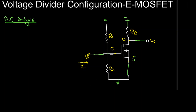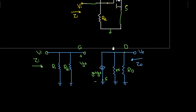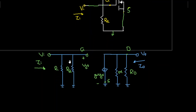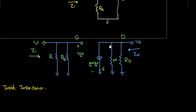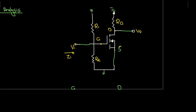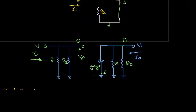Now we put in the AC equivalent circuit of the enhancement type MOSFET. R1 and R2 are connected to the gate terminal and on the other side to ground. The resistance RD is connected to the drain terminal on one side and to ground on the other side.